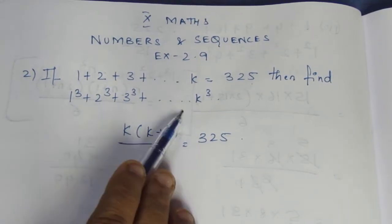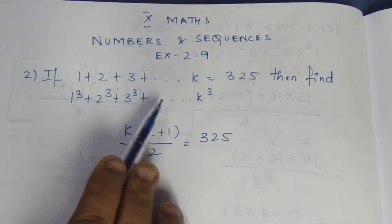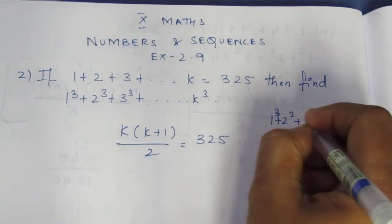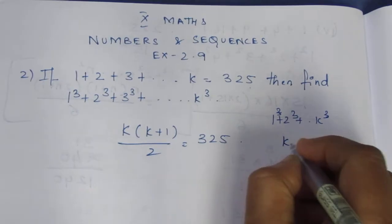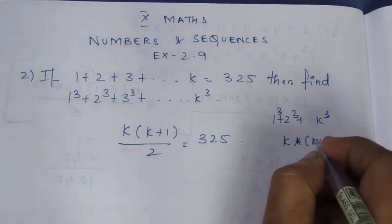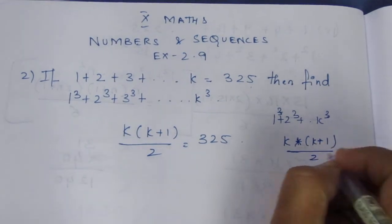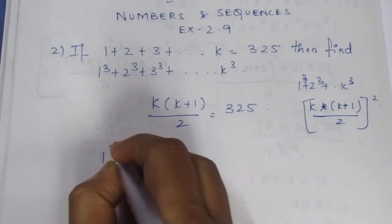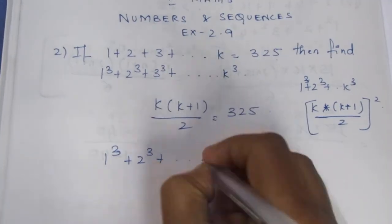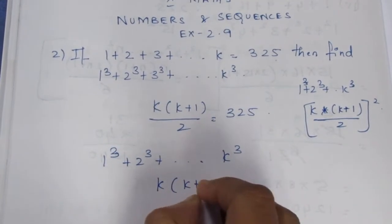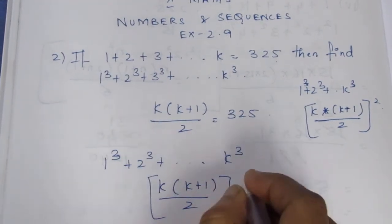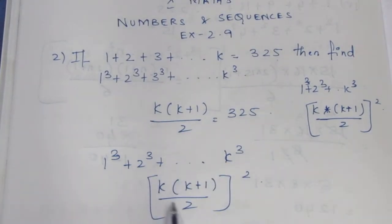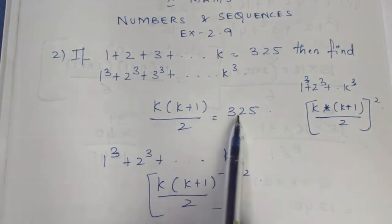For the sum of cubes — 1³ plus 2³ plus 3³ up to k³ — what is the formula? The formula is [k(k+1)/2]². Since k(k+1)/2 equals 325, the cube sum equals 325 squared.